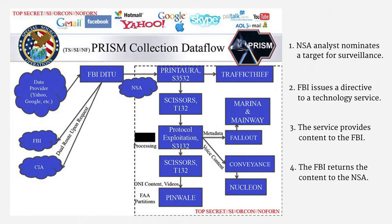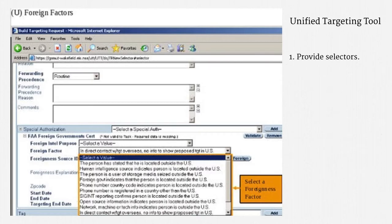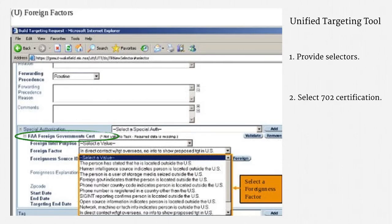Now let me circle back to how an analyst nominates a target. There's an app for that — well, a website. It's called the Unified Targeting Tool, and this is a screenshot. I'd like to highlight a few important steps within the targeting process. First, an analyst provides some selectors — technical criteria for targeting surveillance, like usernames or email addresses. An analyst also chooses the Section 702 certification that covers the target. Here, an analyst has selected the certification related to foreign governments, factions, entities, or political organizations. That's a pretty broad certification.